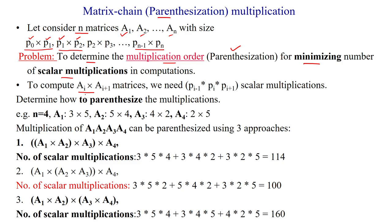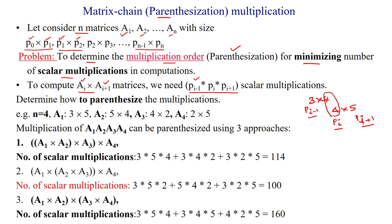To compute two matrices Ai and A(i+1), we need three dimensions. For example, if the first matrix is 3 by 4 and the second is 4 by 5, this is called P(i-1). The number of columns in the first matrix and number of rows in the second matrix are the same. These three dimensions are represented as P(i-1), Pi, and P(i+1).